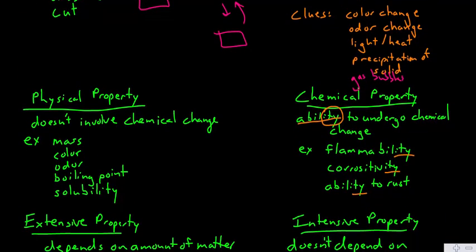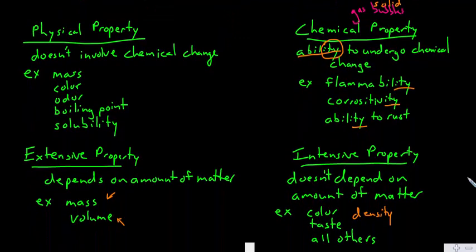So, we also have physical and chemical properties. Physical properties - studying them does not change what you have. It does not involve chemical change. So, there are many: mass, color, odor, boiling point, solubility. You can put a piece of aluminum on a scale, you can get its mass, and in doing so, you don't change what the aluminum was. Physical property. Does not involve chemical change when studying it.